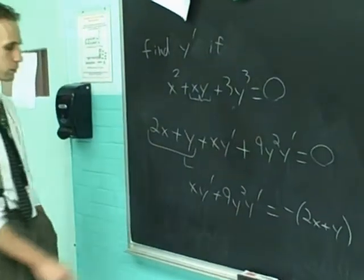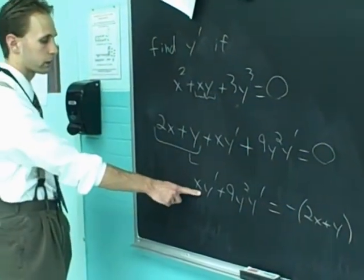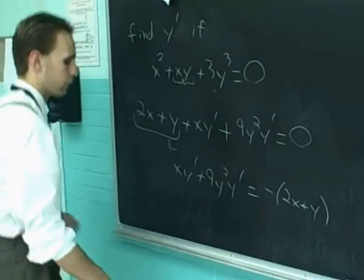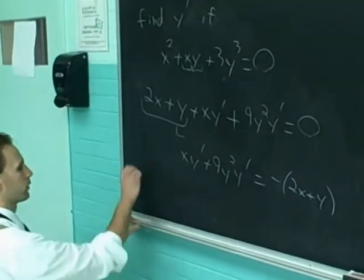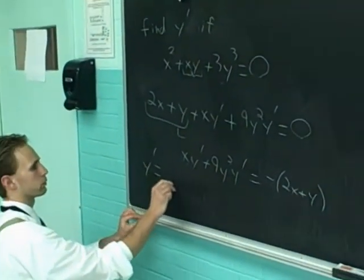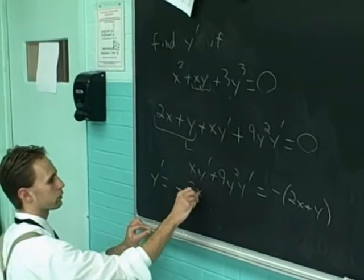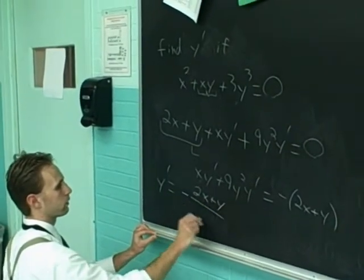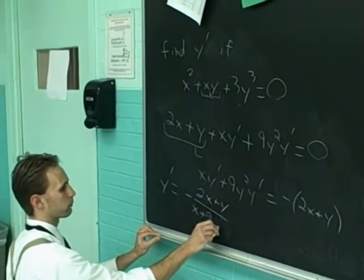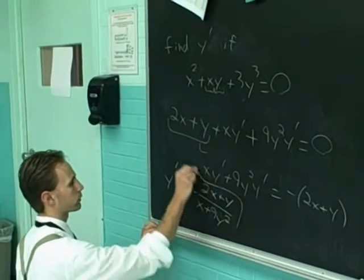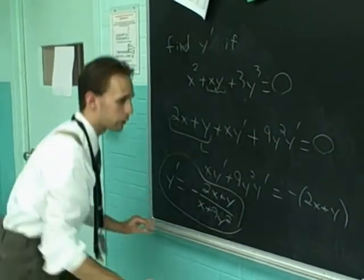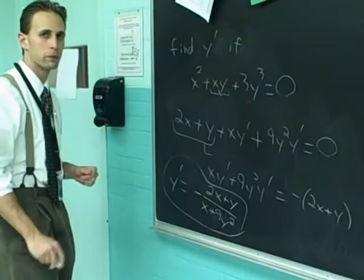After you do that, you see a y prime will factor out of here. And what you end up with, when you divide through, you'll get ultimately y prime equals minus 2x plus y over x plus 9y squared. That'll always work that way. You will always be able to isolate y prime no matter how complicated it gets.